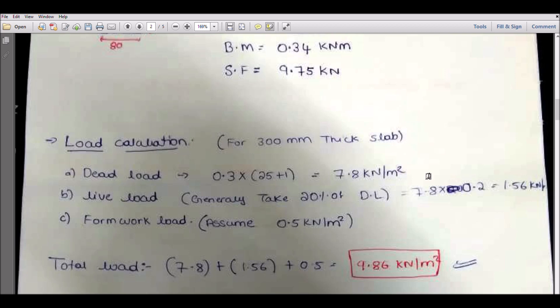We cannot predict the actual live load, so we will take 20% of the dead load. If minimum, we will consider around 0.9 kN per meter square, but here for safety I am considering 20%, which is around 1.56 kN. For formwork load it is 0.5.